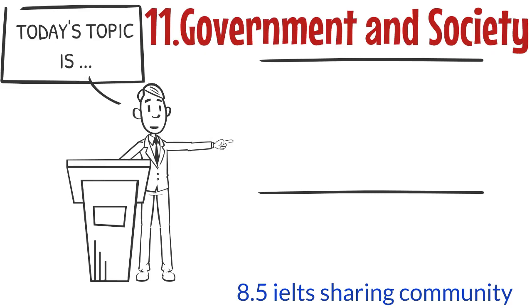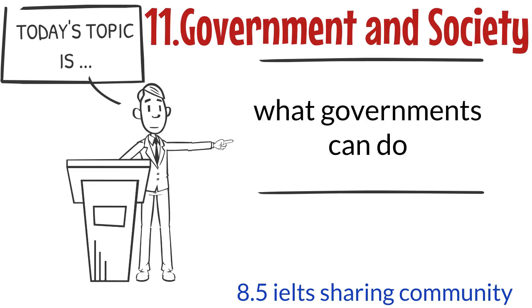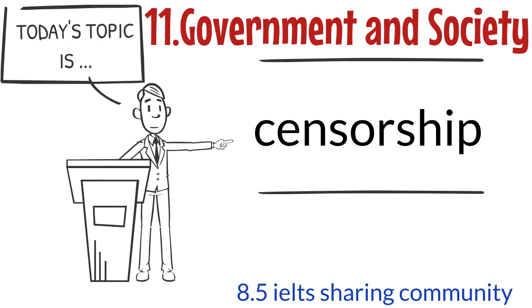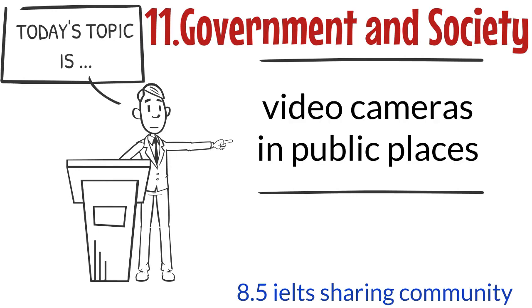Topic 11: Government and Society. Subtopics include What Governments Can Do, Public Services, Censorship, and Video Cameras in Public Places.